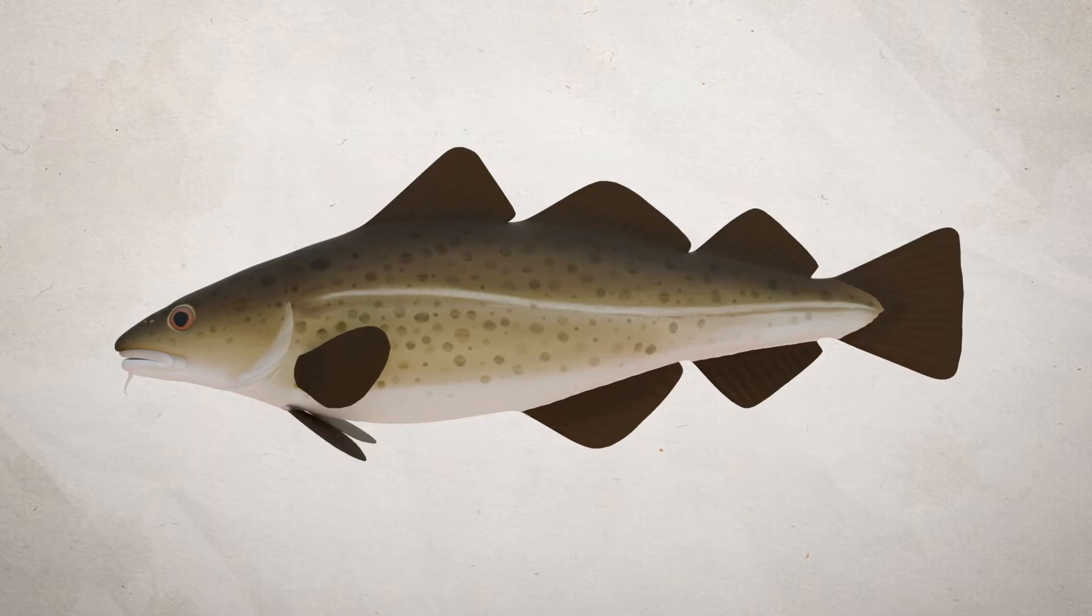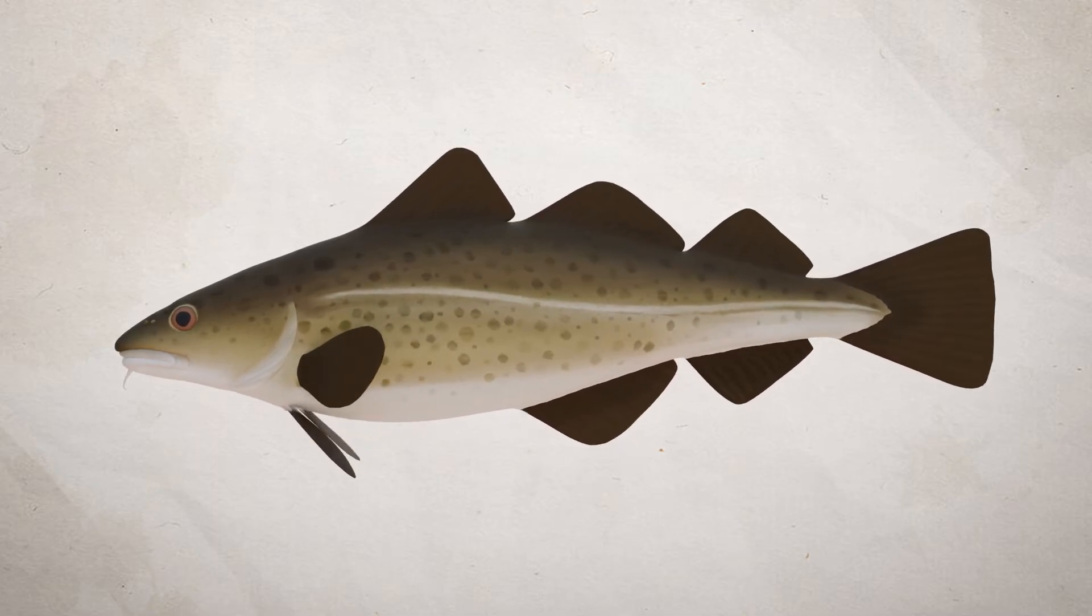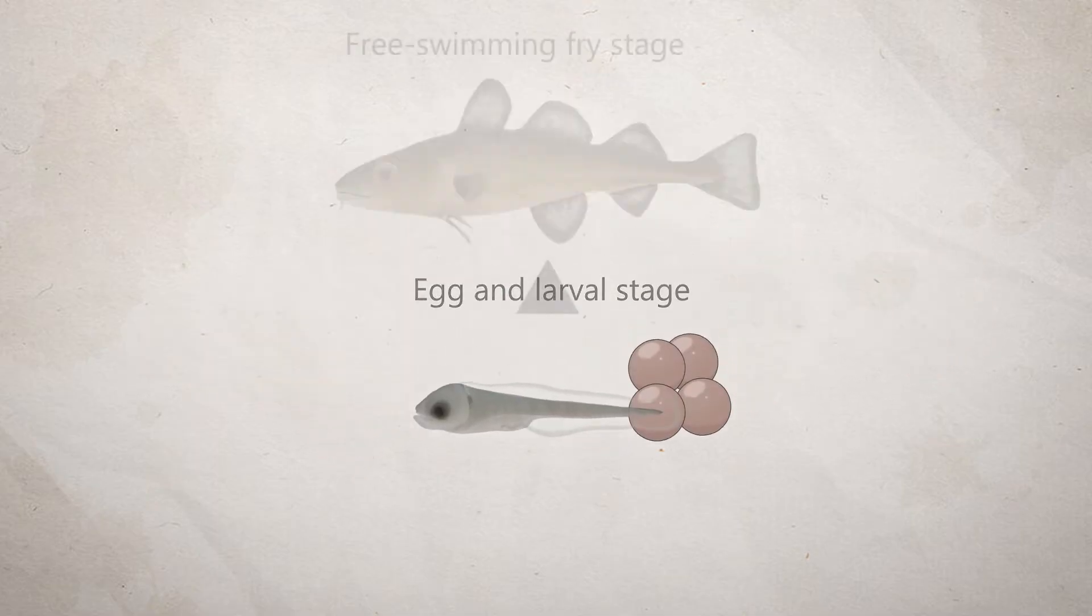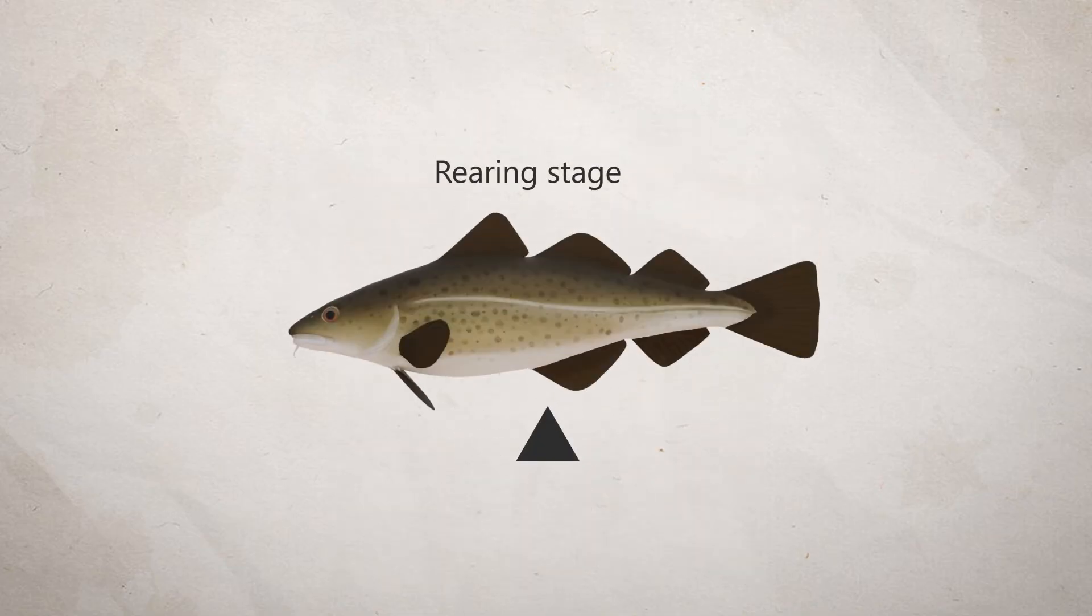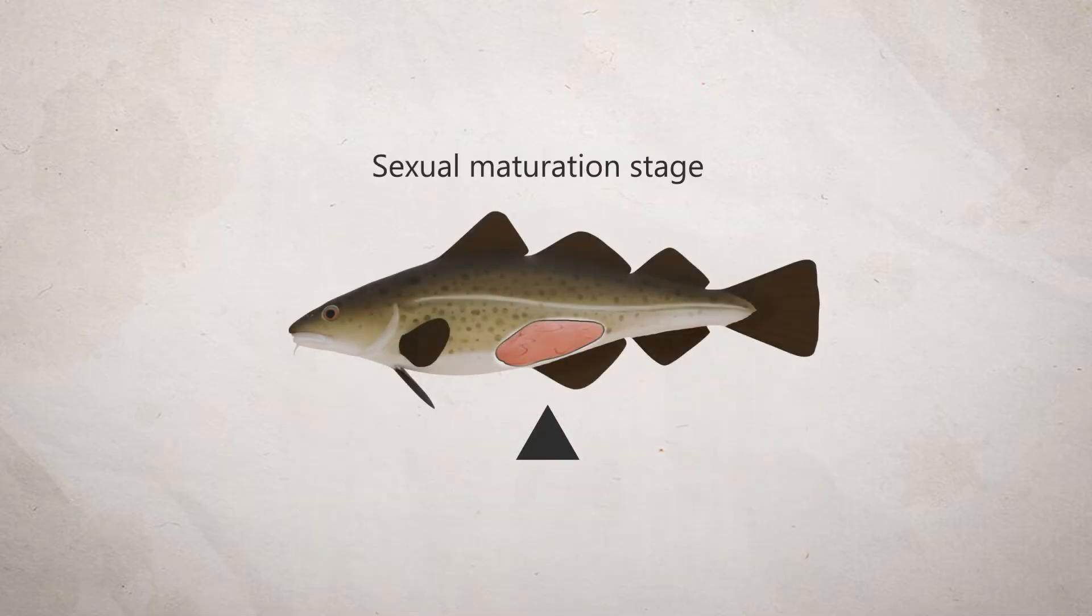The cod's life cycle is normally divided into four stages: the egg and larval stage, the free-swimming fry stage, the rearing stage, which is the period from bottom-dwelling to sexual maturity, and the sexual maturation stage.